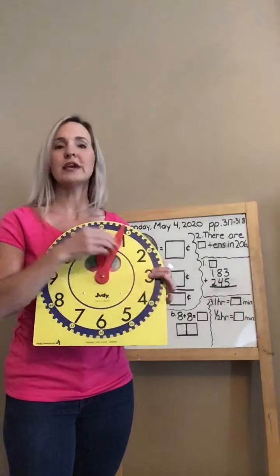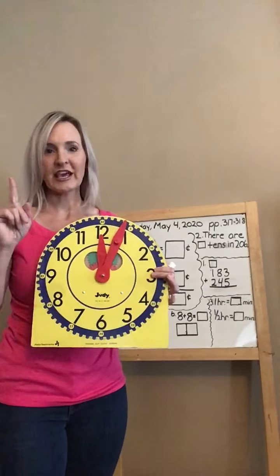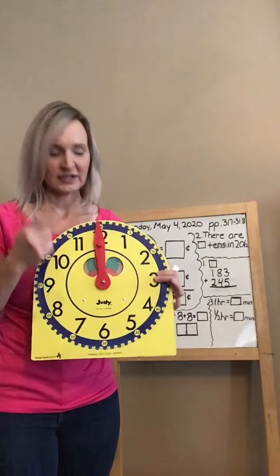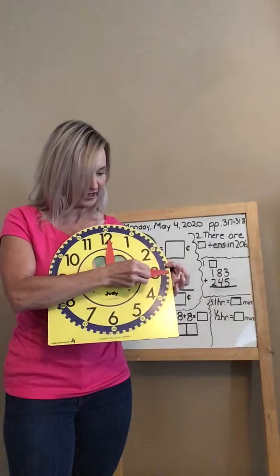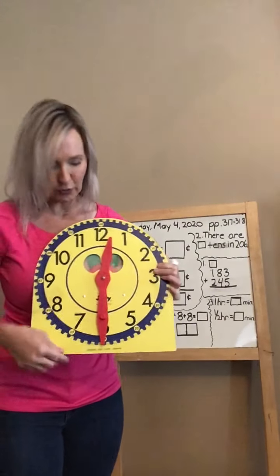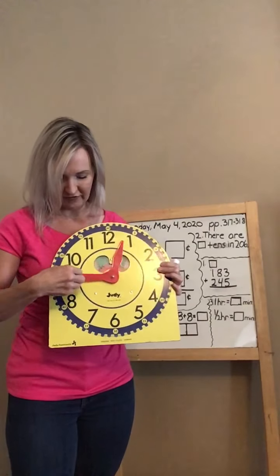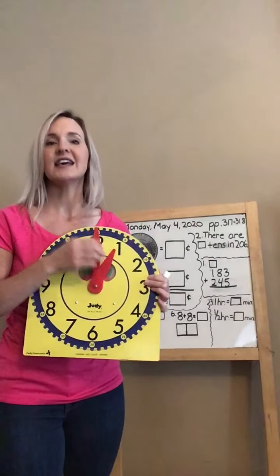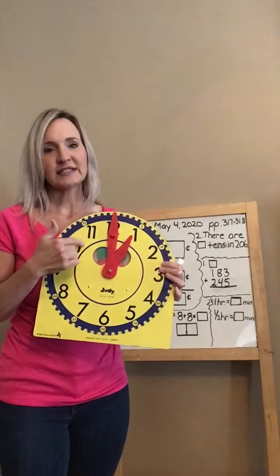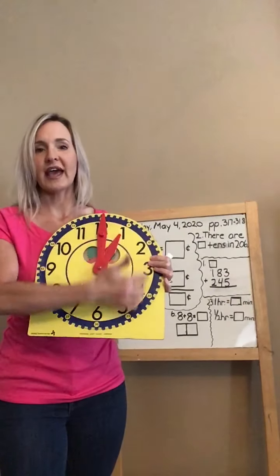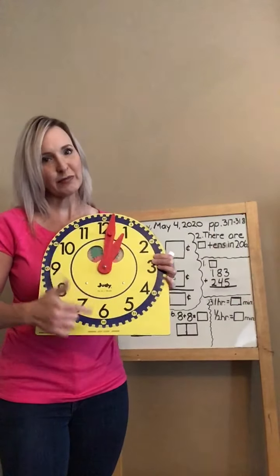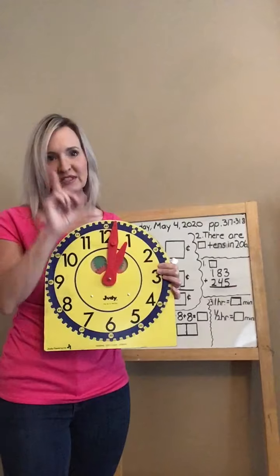My minute hand, or long hand — as it goes around, we count by fives. How many minutes are in an hour? Let's count by five: 5, 10, 15, 20, 25, 30 — 30 minutes is half an hour — 35, 40, 45, 50, 55, 60. There are 60 minutes in an hour, and 30 minutes in half an hour. We're going to look at that today — you'll see why I wanted to review it.